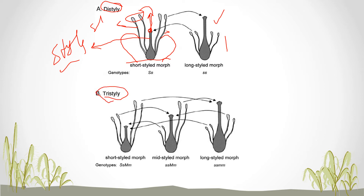In tristyle, you have three flowers with three different lengths of style and also three varying lengths of stamen and anthers. Each length is codified by a separate gene. For example, the long-styled flower is coded by the recessive genotype 'ss', whereas the short-styled flower is coded by genotype 'SS'. This is the basic differentiation between distyle and tristyle.